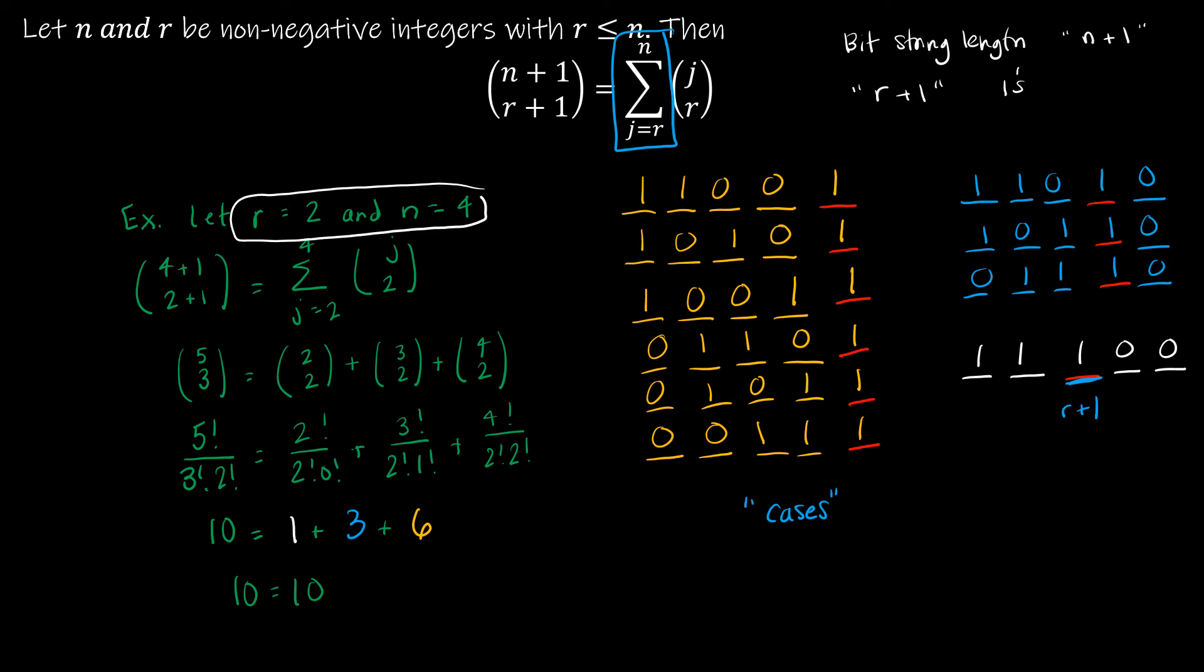That I could have my last 1 is in the r plus 1th position. Okay, because if there are r plus 1 ones, the only way that could happen is if we have ones up to that point, no zeros.